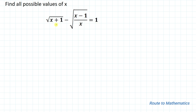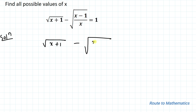So here we are asked to find all the values of x. Without any delay, let's start the solution. In this equation we have root overs, so in order to remove this root over, the first thing that comes to mind is to square both sides of the equation.